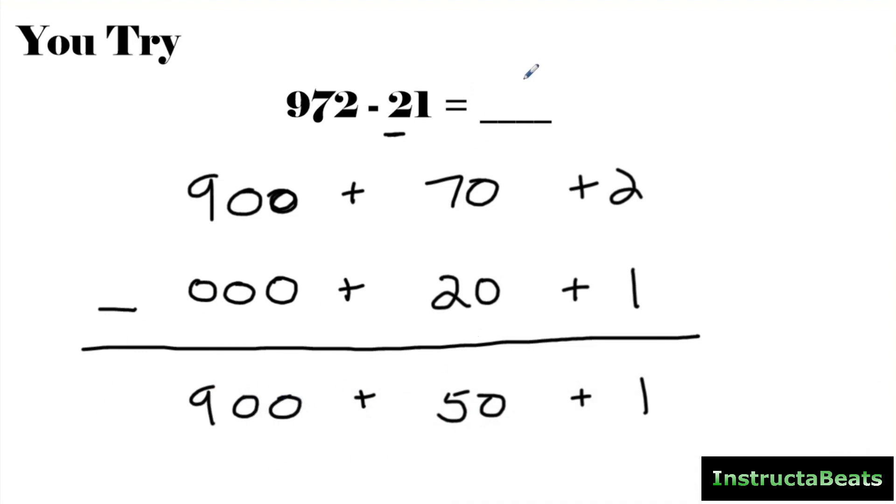And so when I put this back together, I have a 9 in the 100s place, a 5 in the 10s place, and a 1 in the 1s place. So the difference between 972 and 21 is 951.